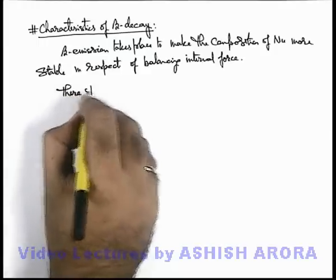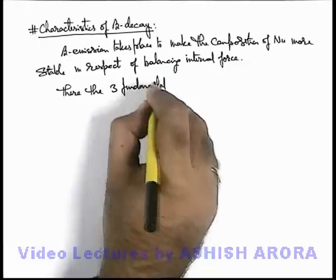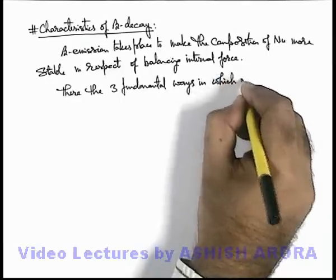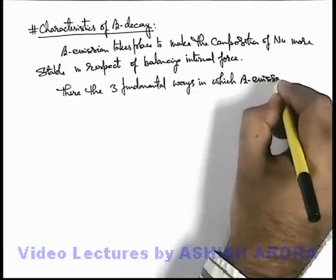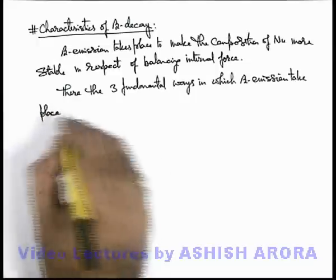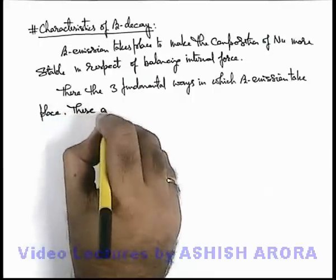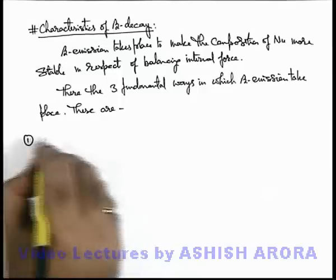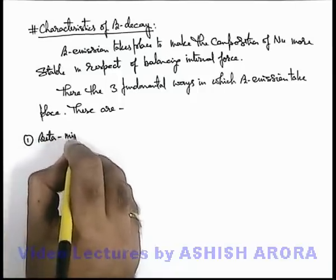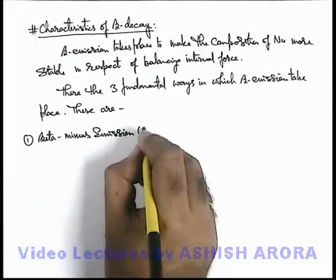There are 3 fundamental ways in which beta emission can take place, and either of these are possible in various situations. The very first, which I'll be taking one by one, is beta minus emission, also written as β⁻.